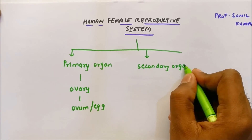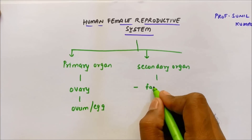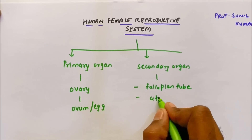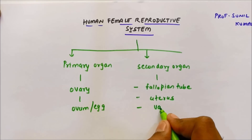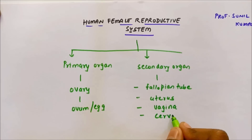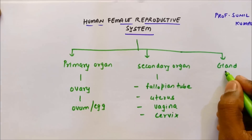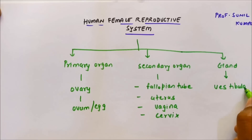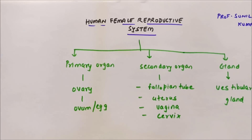The second part is the secondary organs — those involved in reproduction. These are: first, the fallopian tube; second, the uterus; third, the vagina; and fourth, the cervix. There is also a gland present called the vestibular gland. These are the various parts of the female reproductive system.